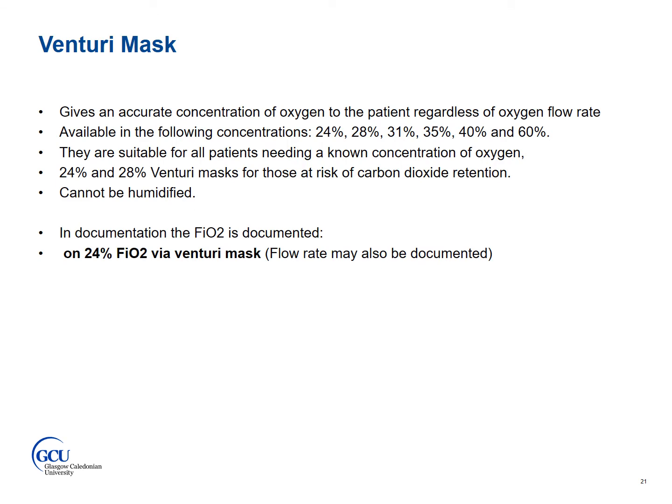A Venturi mask will give an accurate concentration of oxygen to the patient regardless of oxygen and flow. The minimum suggested flow rate is written on each Venturi device. Venturi masks are available in the following concentrations: 24, 28, 31, 35, 40 and 60%. They are suitable for all patients who need a known concentration of oxygen; however, 24 and 28% Venturi masks are particularly suited for those at risk of carbon dioxide retention. They work by carrying the oxygen through narrow tubing — when it reaches the valve, some room air is entrained through the port, and this process determines the specific oxygen concentration that is delivered.